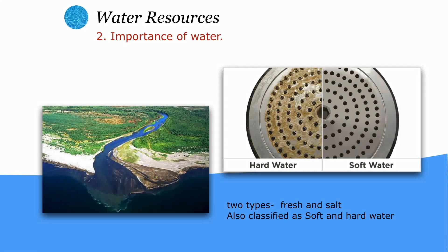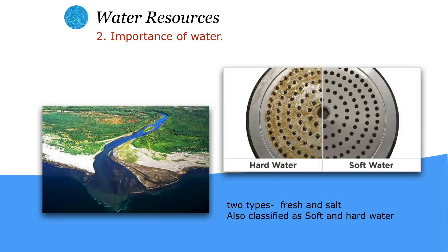Salt water examples include oceans and marine water. Water is also classified into hard water and soft water. Hard water mainly contains calcium and magnesium ions, while soft water does not contain calcium and magnesium ions. There may be other ions present, but mainly calcium and magnesium ions are absent in soft water.